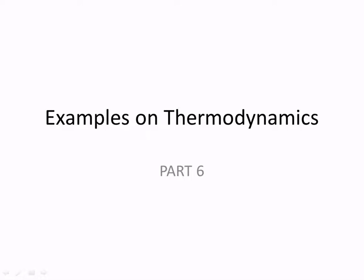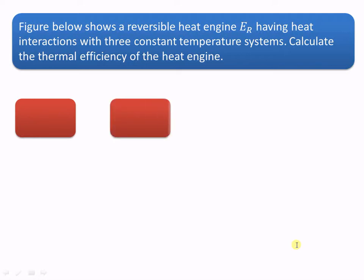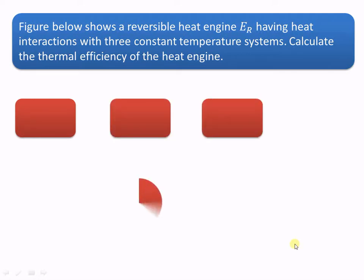In this video we will see some more examples on thermodynamics. The figure shows a reversible heat engine having heat interaction with three constant temperature systems, and we have to calculate the thermal efficiency of this particular heat engine.